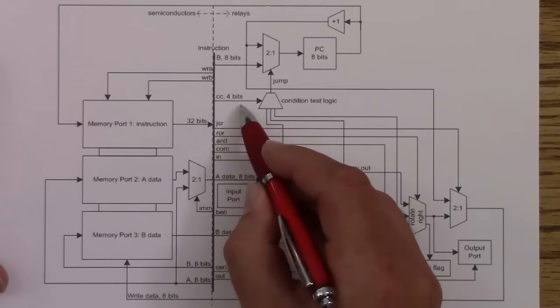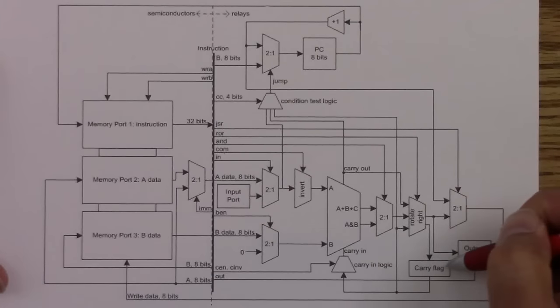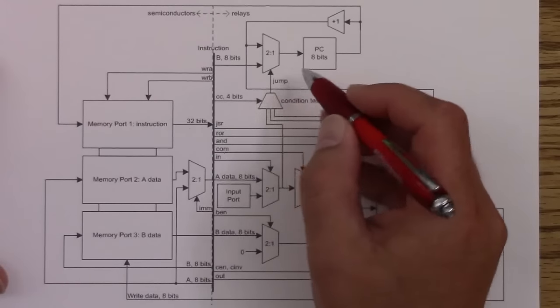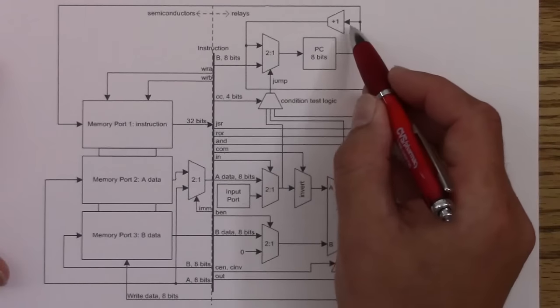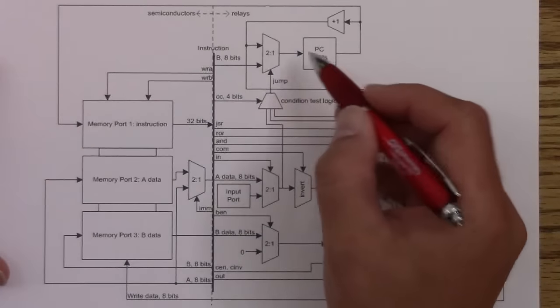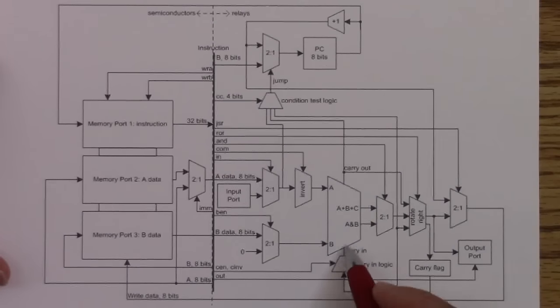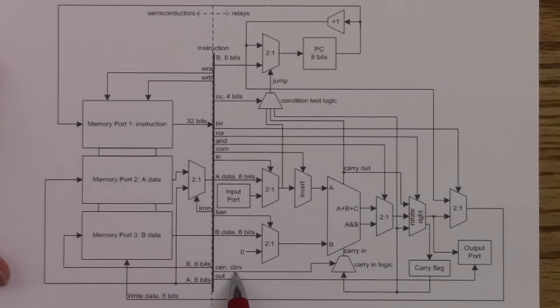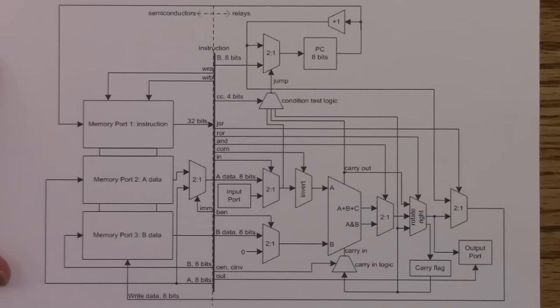There's condition test logic, which uses four bits. Basically we have the negative, zero, and carry. Here's the carry flag over here. That are used to test for various conditions. If the condition is true, then we jump to the B operand. Otherwise, we use the incremented program counter as the next instruction address. There are some bits to control the carry flag. Are we going to use the carry flag in this instruction or not, and should we invert it? So if we don't use the carry flag, then if we invert it, you insert a 1. So this is one way to increment with the ALU. And that is about it.